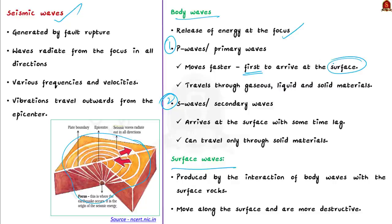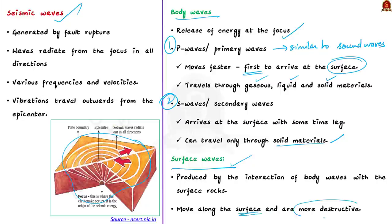P waves move faster and are the first to arrive at the surface. They are similar to sound waves and can travel through gaseous, liquid, and solid materials. S waves arrive with some time lag and can only travel through solid materials. When body waves interact with surface rocks, they generate a new set called surface waves. Surface waves move along the surface and are more destructive because they cause displacement of rocks, eventually leading to the collapse of structures.